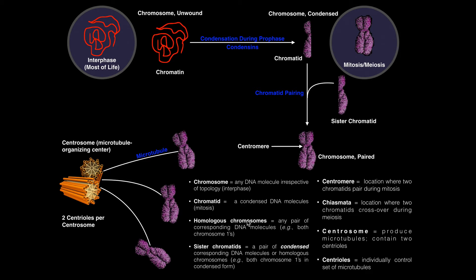Now let's talk about sister chromatids and homologous chromosomes in the context of humans. Humans have 46 total chromosomes, so they have 23 pairs. Every human somatic cell has two chromosome 1s, two chromosome 2s, two chromosome 3s, and so on. Homologous chromosomes refers to any pair of corresponding DNA molecules. For example, chromosome number five — there are two of these, and they're homologous chromosomes regardless of whether they're in chromatin or chromatid form, because the term chromosome doesn't specify shape.